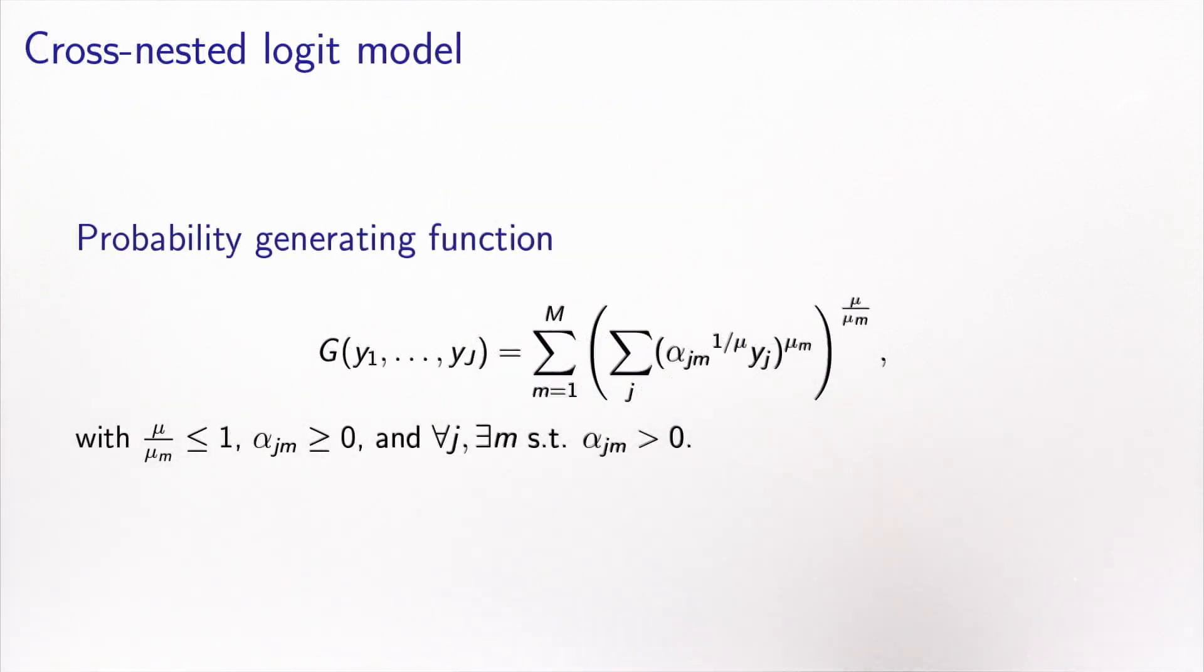And this is what I've done here. So this is the probability-generating function for the cross-nested logit model. So we have the sum over all the nests. And within each nest here, we sum over all J, all alternatives, in the choice set. And here, we multiply the argument that corresponds to this alternative by the membership parameter. The mu parameter will be normalized to 1, so you can somehow ignore it. I put it here to be complete.